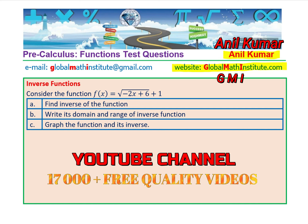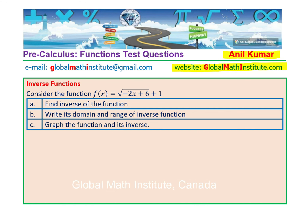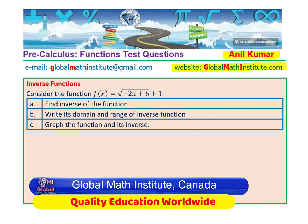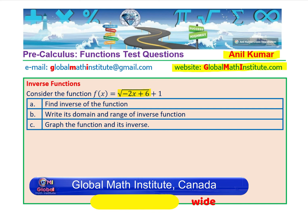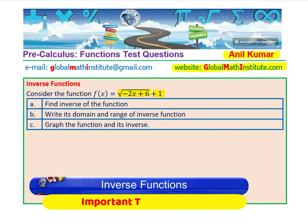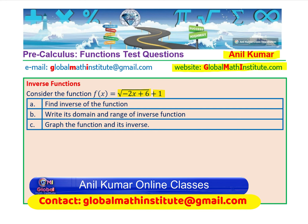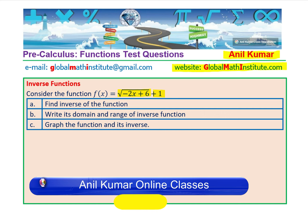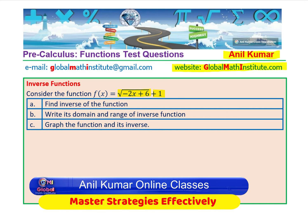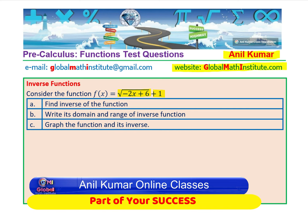In this video, we will discuss a very important radical function: f(x) = √(-2x + 6) + 1. This test question is kind of difficult — we have seen 90% of students getting it wrong. Let us try to understand what mistakes they have been making and how we can get it absolutely right.